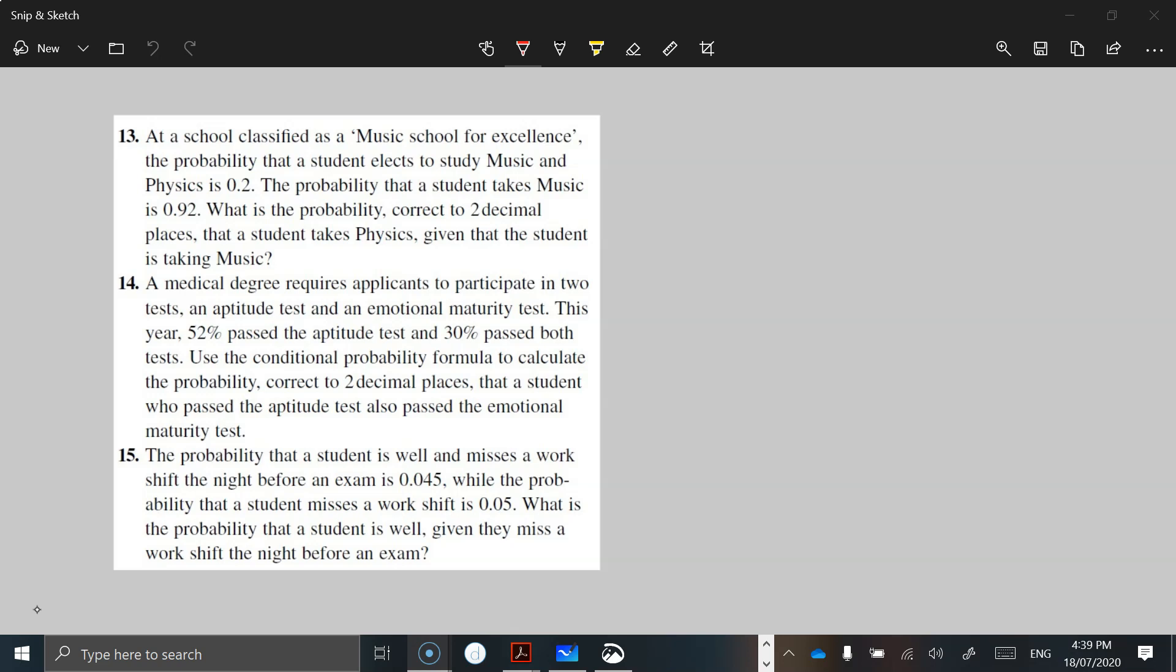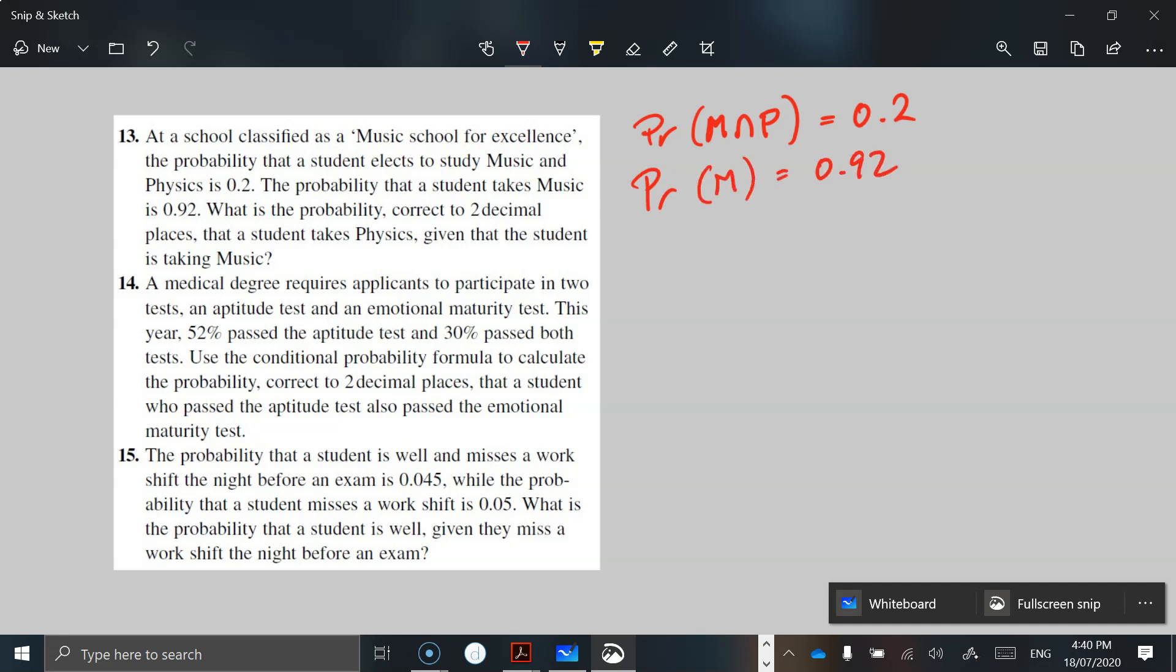At a school classified as a musical school for excellence, the probability that a student elects to study music and physics - so the probability of music intersection physics, both of those two - is 0.2. So we're looking at probability in decimal form. Then the probability that a student takes music is 0.92, or just music in general. What is the probability that a student takes physics, given that the student is taking music?